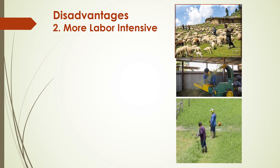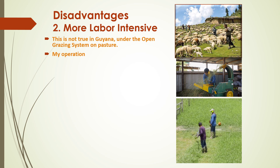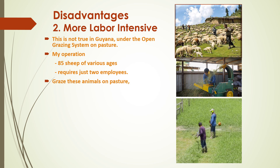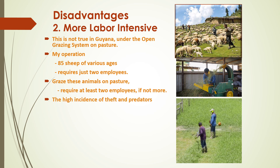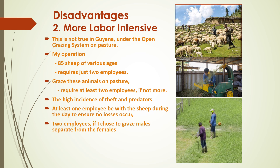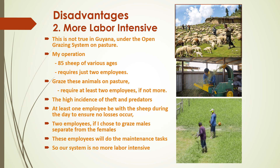The second disadvantage often stated is that our system is more labor intensive. This is not true in Guyana under the open grazing system on pastures. In my operation, which accommodates around 85 sheep of various ages, the operation requires just two employees to efficiently handle the system. However, if I chose to graze these animals on pasture, I would require at least two, if not more, employees because of the high incidence of theft and predators. So our system is no more labor intensive than others.